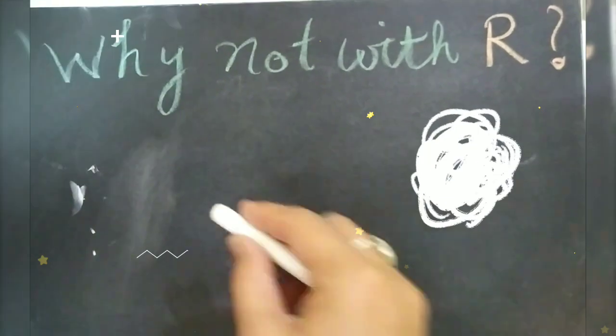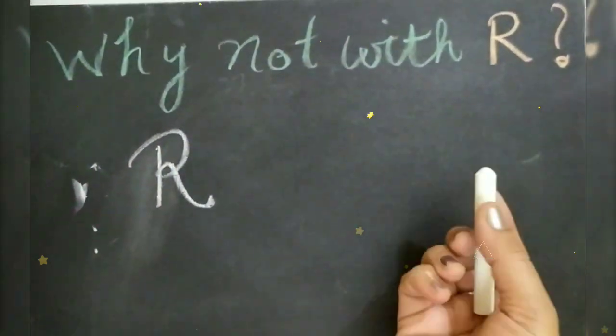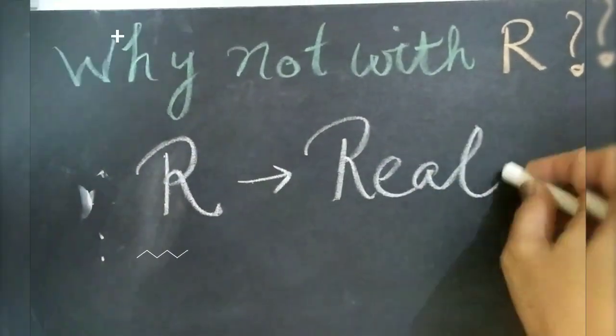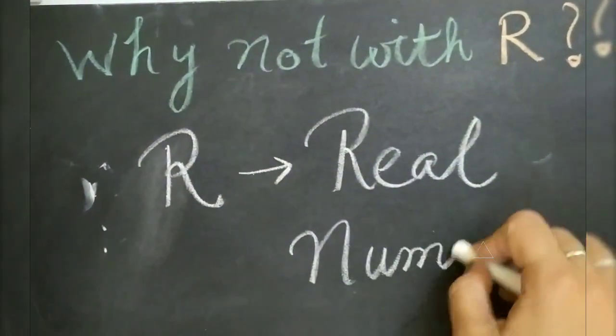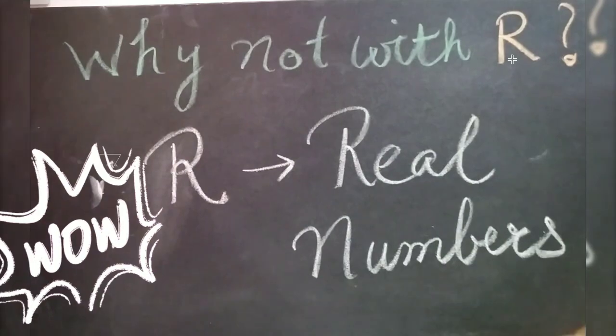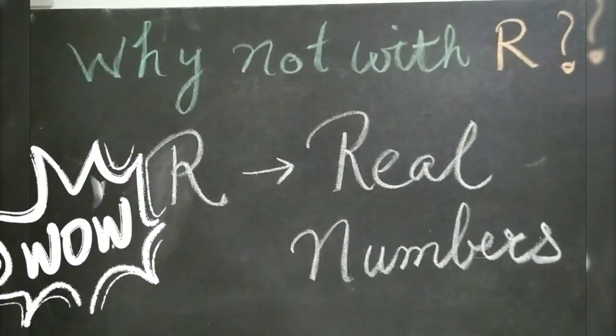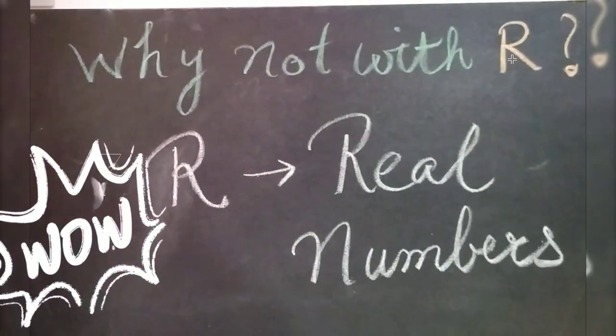Well, because R is already booked. R is already the representation for the set of numbers which are called real numbers. So that is why R cannot represent two sets of numbers.